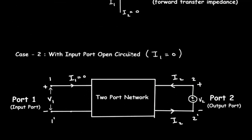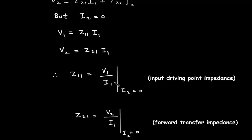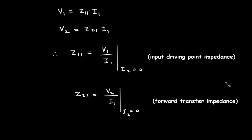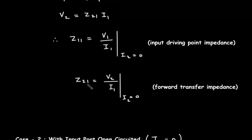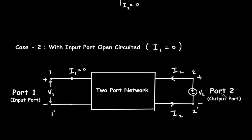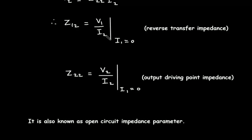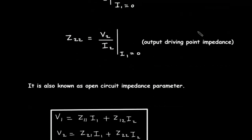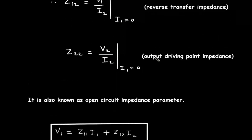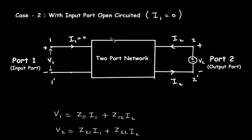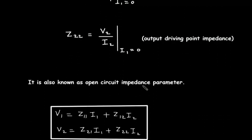When Z11 is the ratio of input voltage and input current, it is the input driving point impedance. When the Z parameter is the ratio of output voltage divided by input current, it is called forward transfer impedance. When it is the ratio of input voltage and output current, it is called reverse transfer impedance. Z parameter is also known as open circuit impedance parameter, since we are open circuiting port 1 at one time and port 2 at another time.